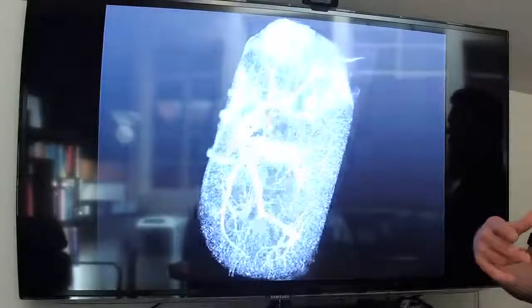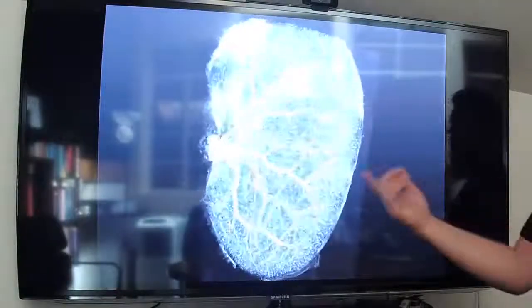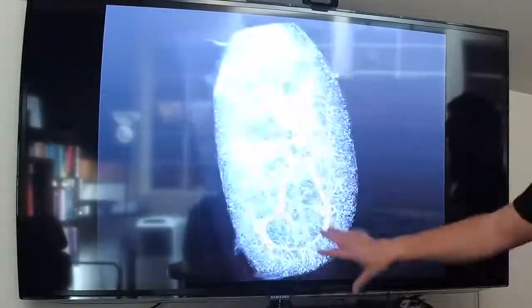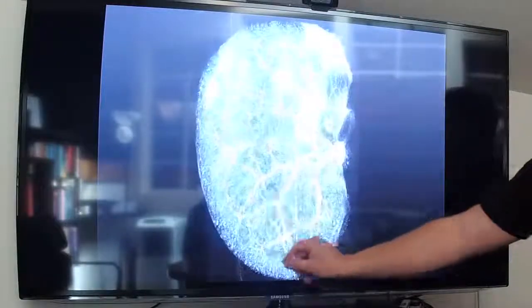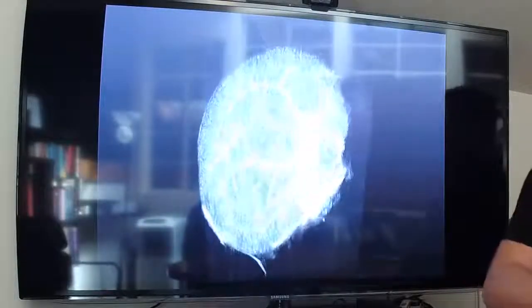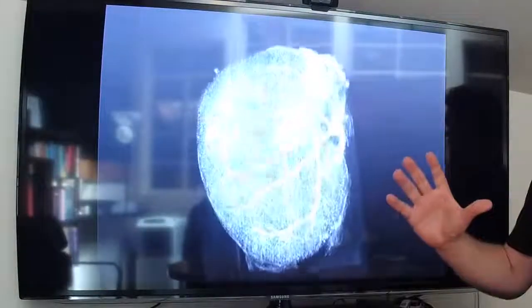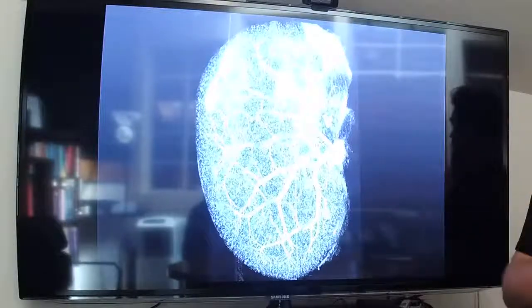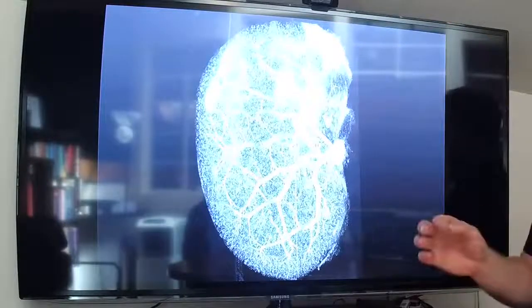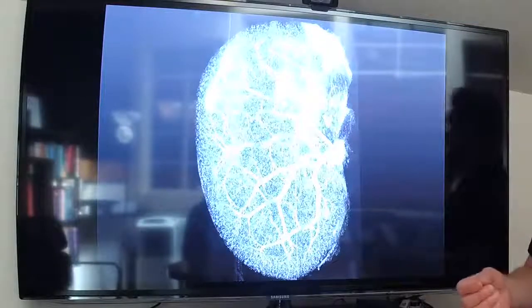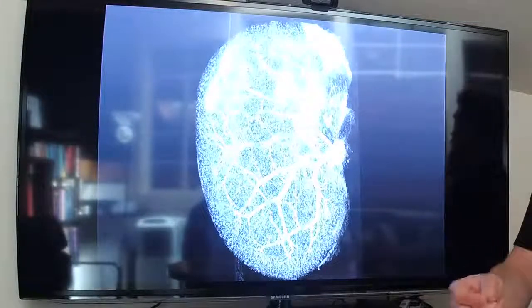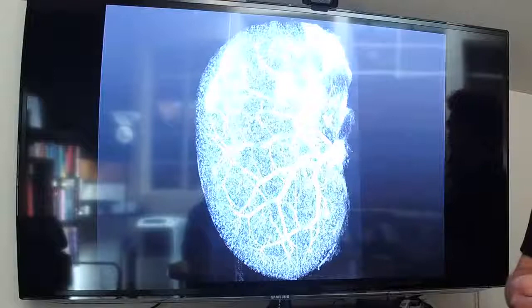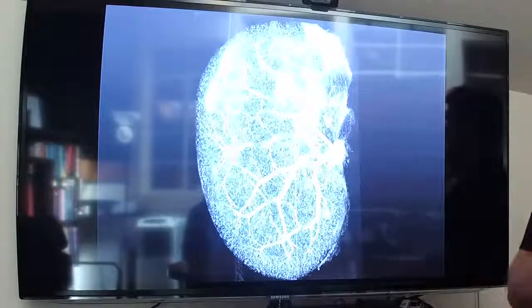And so this is that same kidney where we've downsampled it in order to fit it on the screen. We're rotating it. And so at this scale, you can see the major blood vessels in those smaller blobs. Those are the glomeruli of the kidney. I wanted to show this to you so you can see that we can fit a whole organ into the system.